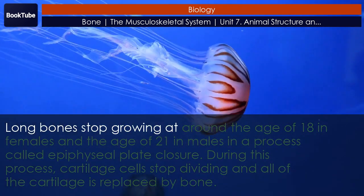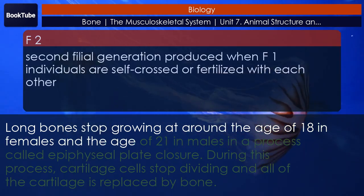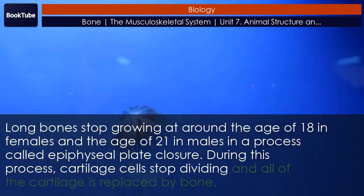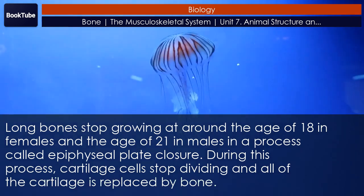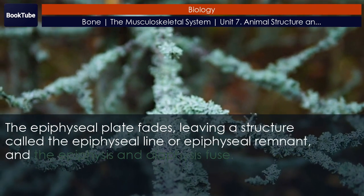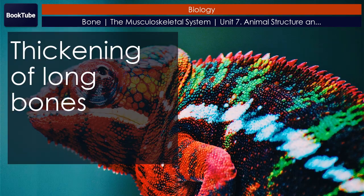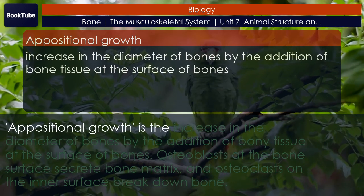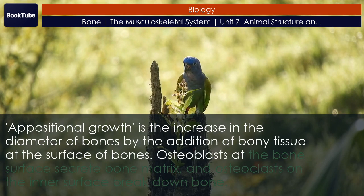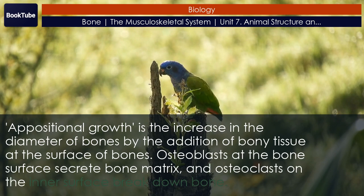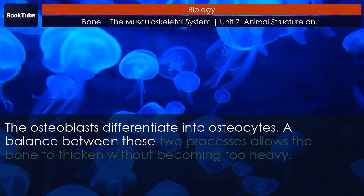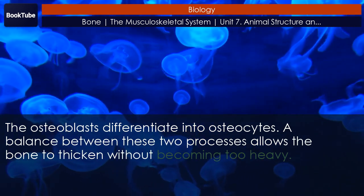Long bones stop growing at around age 18 in females and age 21 in males in a process called epiphysial plate closure. During this process, cartilage cells stop dividing and all of the cartilage is replaced by bone. The epiphysial plate fades, leaving a structure called the epiphysial line or epiphysial remnant, and the epiphysis and diaphysis fuse. Appositional growth is the increase in the diameter of bones by the addition of bony tissue at the surface of bones. Osteoblasts at the bone surface secrete bone matrix, and osteoclasts on the inner surface break down bone. The osteoblasts differentiate into osteocytes. A balance between these two processes allows the bone to thicken without becoming too heavy.